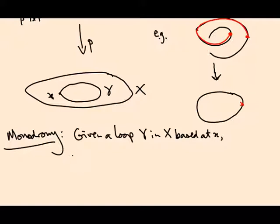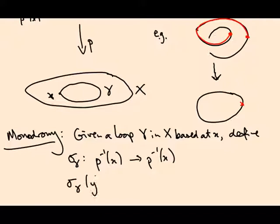...we're going to define the monodromy around gamma to be sigma gamma. This is a permutation of P inverse X, defined by saying sigma gamma of Y is gamma tilde of 1, where gamma tilde is the unique lift of gamma starting at Y.